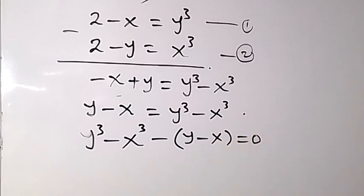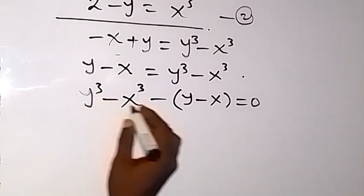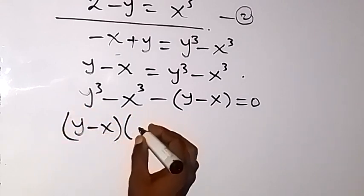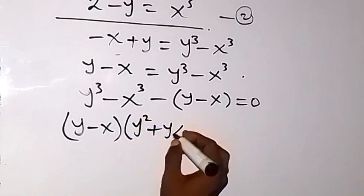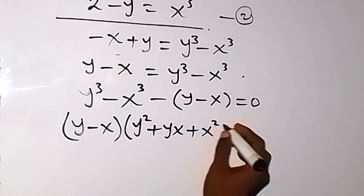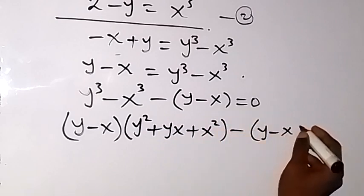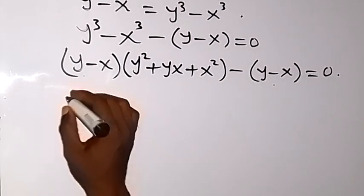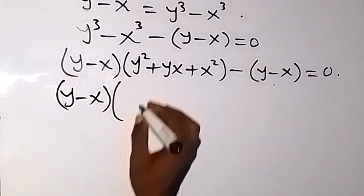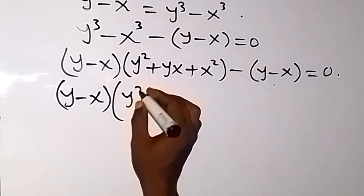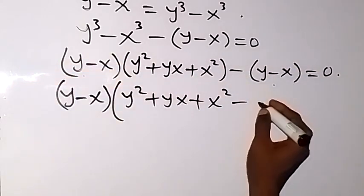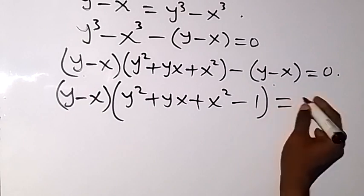Now let's apply the difference of two cubes: y cubed minus x cubed equals (y minus x)(y squared plus yx plus x squared). So we have (y minus x)(y squared plus yx plus x squared) minus (y minus x) equals zero. We factor out the common term y minus x, giving us (y minus x)(y squared plus yx + x squared minus 1) equals zero.